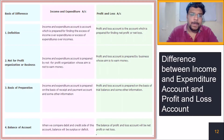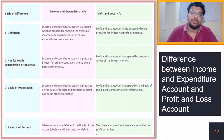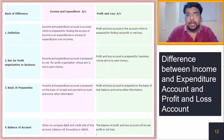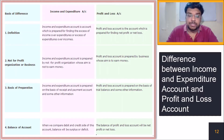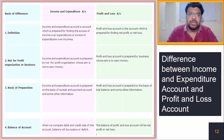The income and expenditure account is prepared on the basis of the receipt and payment account and some other information. In most questions you will find a receipt and payment account available so that we can prepare the income and expenditure account. The profit and loss account is prepared on the basis of the trial balance and some other information, like we did in 11th. The balance of the income and expenditure account will be surplus or deficit, and the balance of the profit and loss account will be net profit or net loss.